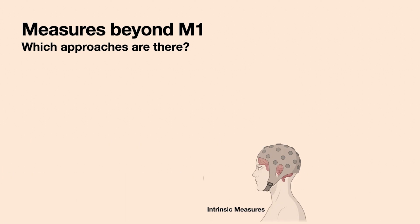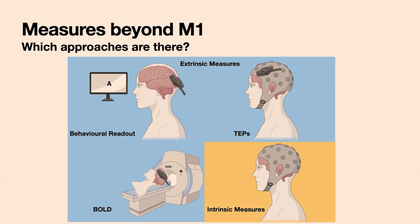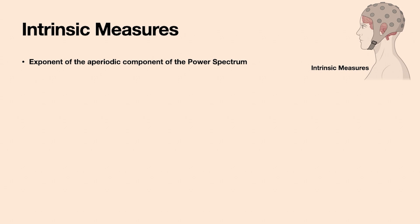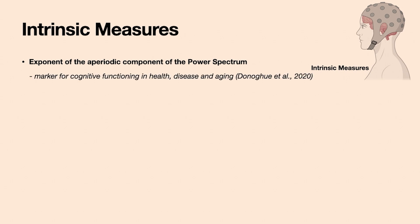Some people wondered whether we need TMS at all to evaluate cortical excitability. That's what they termed intrinsic measures, as compared to extrinsic measures where we have to rely on TMS. There is a variety of suggestions for intrinsic measures, mostly brain oscillation-based requiring EEG or MEG. The key point is to see how authors understood cortical excitability and how they validated their measures — and there is a huge variety.